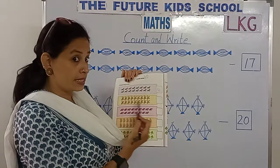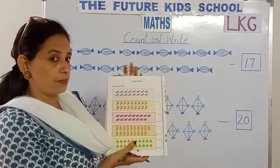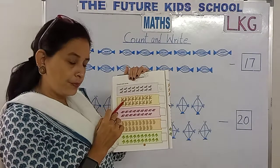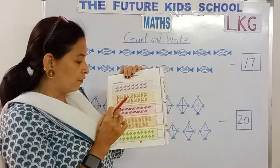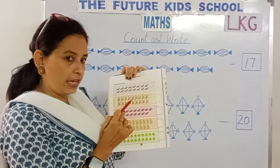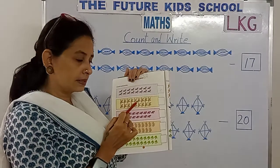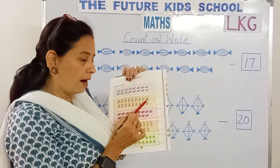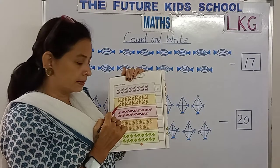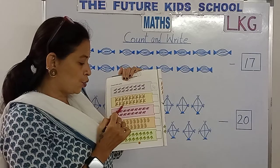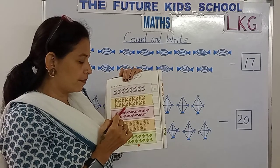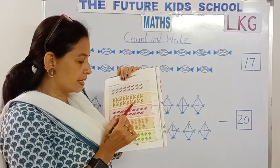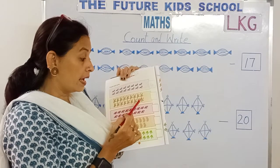Look here, we've got zips over here. Let's count the number of zips. Let's do it together, children. Look. 1, 2, 3, 4, 5, 6, 7, 8, 9, 10, 11, 12, 13, 14, 15, 16, 17, 18.